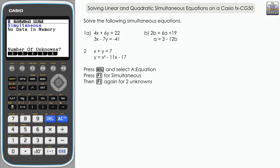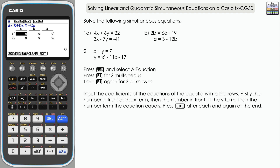We've got two unknowns in the first case, x and y. The equation at the top is essentially ax plus by equals c. The subscript refers to coefficients — the numbers in front of the terms. So a is the number in front of x, b is the number in front of y, and c is just the constant term on its own.